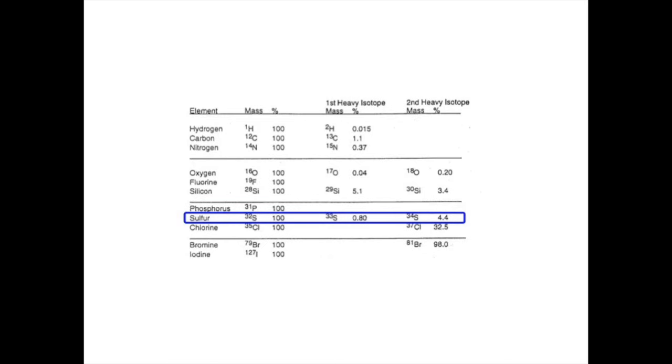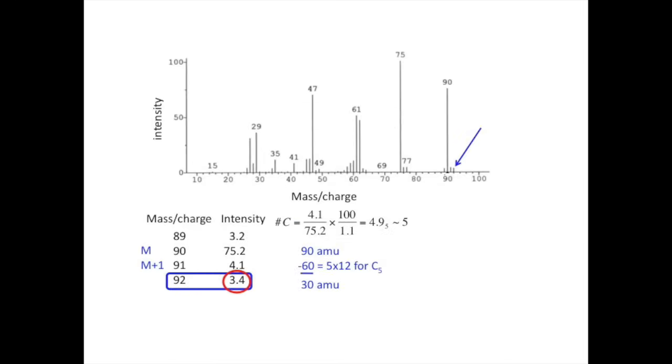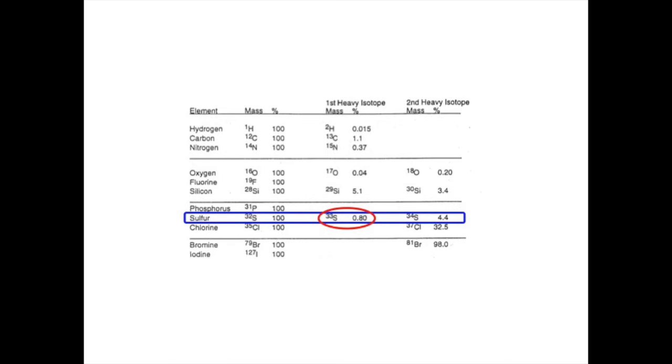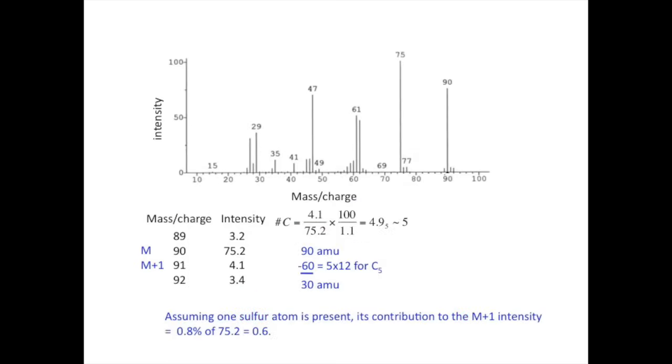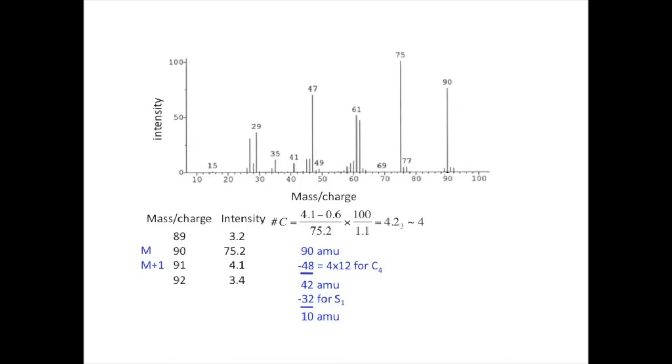If an atom of sulfur were present, then it would contribute to the M plus 2 intensity a signal of 4.4% as intense as the signal of the molecular ion. 4.4% of 75.2 would give us a signal of 3.3 units, and that jives very well with the intensity of the peak at mass 92. Also, notice that a sulfur atom will contribute to the M plus 1 peak. So, if one sulfur atom is present, we should adjust the intensity for the M plus 1 ion before calculating the number of carbon atoms. We see that the sulfur would contribute 0.6 to the intensity of the M plus 1 ion. So, we correct the intensity at M plus 1 by subtracting 0.6 from the value of 4.1 in order to calculate the carbon number. This gives us a value of approximately 4. Subtracting out the mass of 4 carbons and one sulfur leaves us with 10 AMU, which suggests the formula of C4H10S.